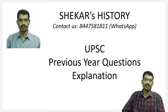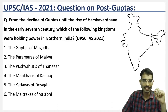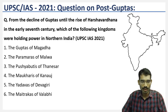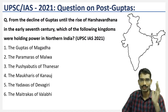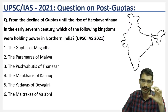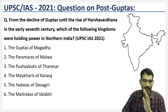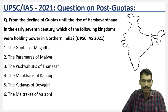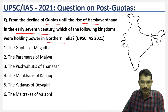Welcome to Shaker's History Classes. We are discussing UPSC previous year questions. This question was asked in 2021. Many students skip the area after the decline of the Guptas and before the rise of the Delhi Sultanate, however UPSC has asked questions in this area in both 2020 and 2021. The question asks: from the decline of the Guptas until the rise of Harshavardhana in the early 7th century, which kingdoms were holding power in northern India?